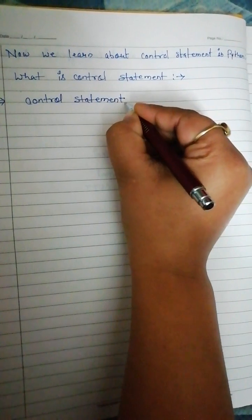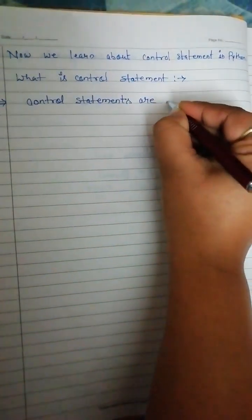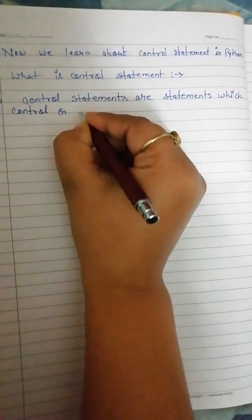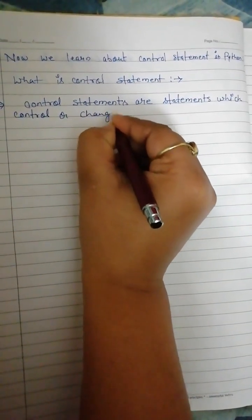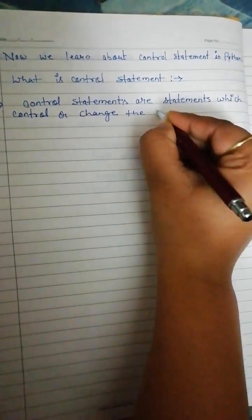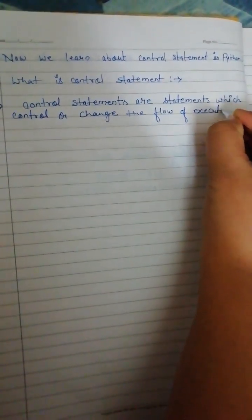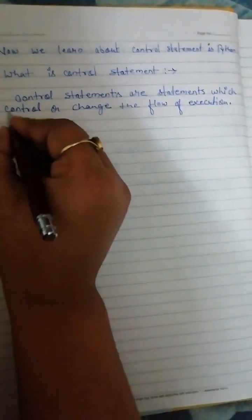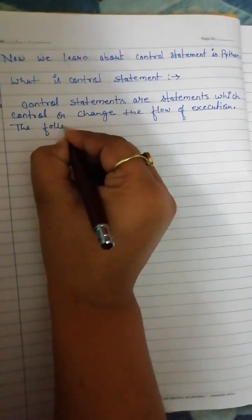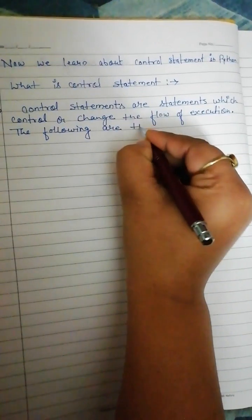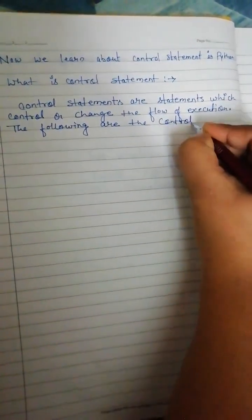Control statements are statements which control or change the flow of execution. The following are the control statements available in Python.